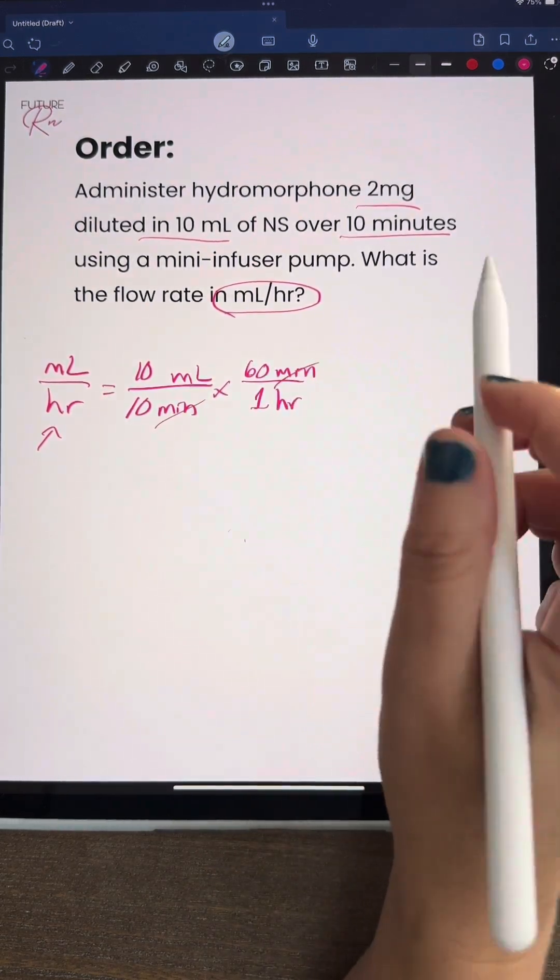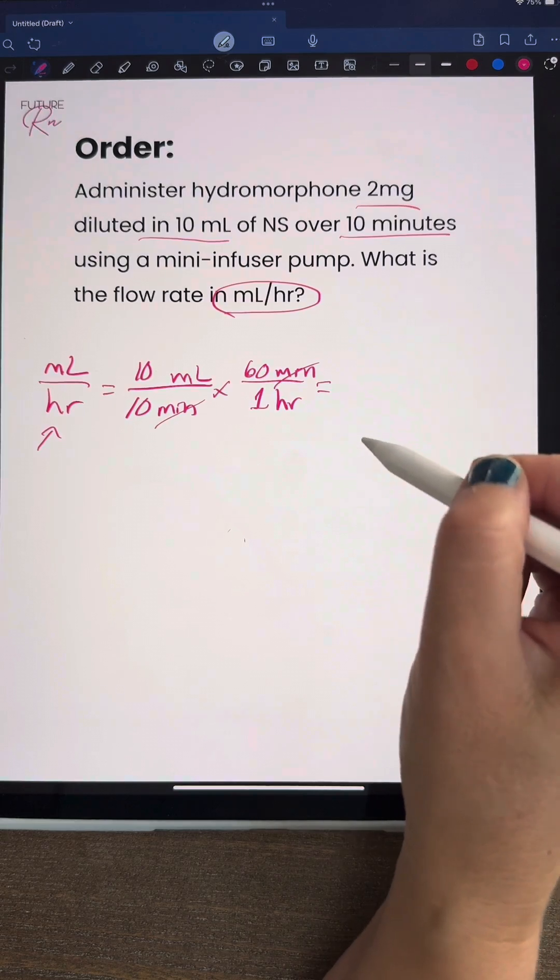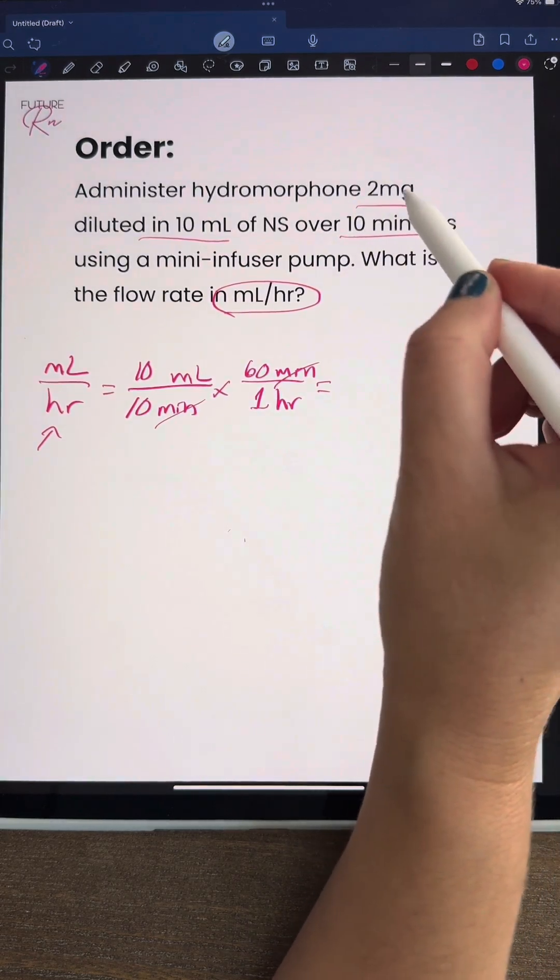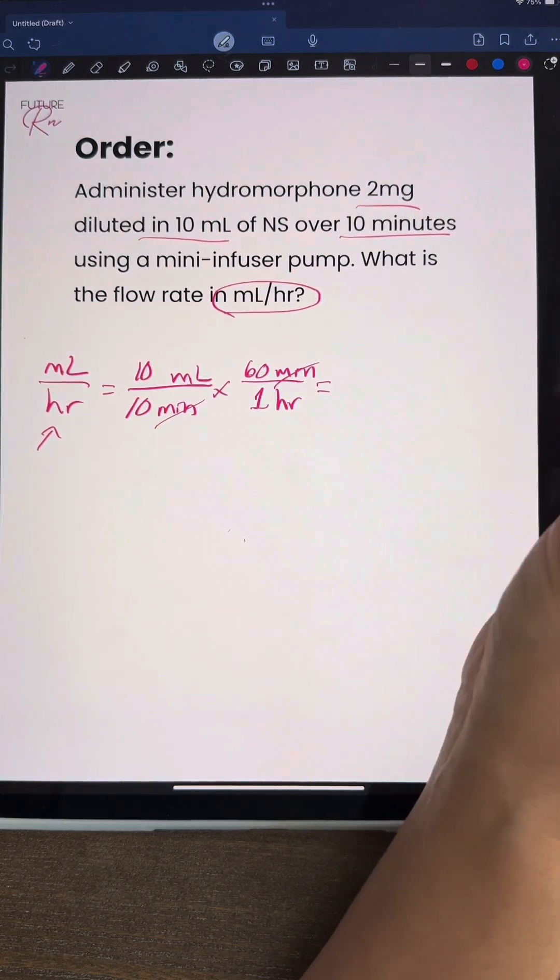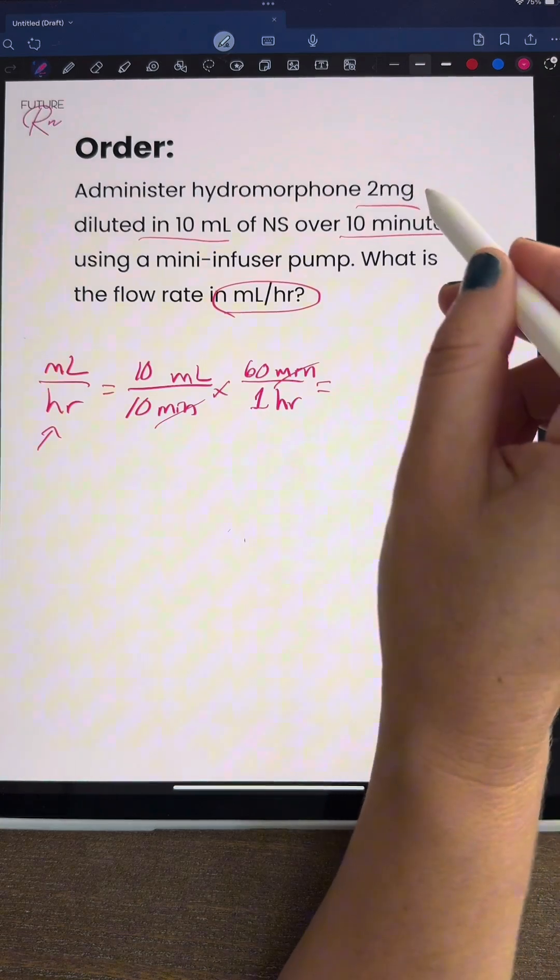We're going to cross off our minutes and do straight multiplication. This is a little bit of a trick question because we have this 2 milligrams up here that we really don't need. If we're going for milliliters per hour, we know that the dosage on this question doesn't really matter.